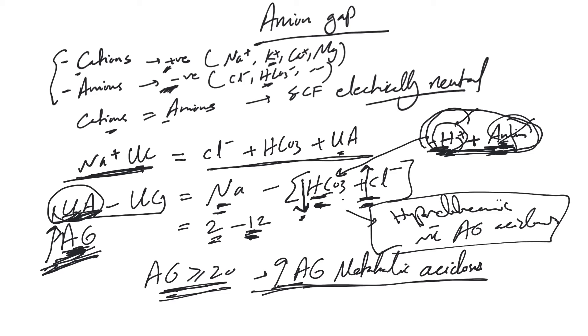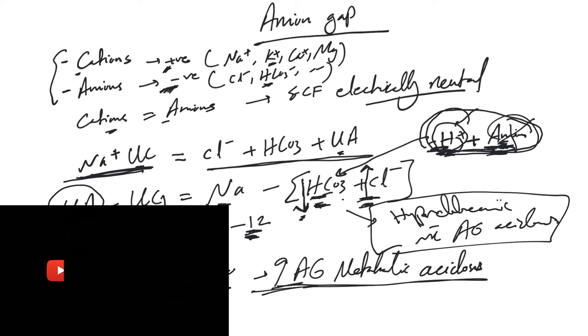Hopefully this makes it clear how the anion gap concept is created. Understanding this will make things much easier for us. Next video we'll start interpreting or looking into how to interpret ABGs. After that, we'll start talking about the different acid-base disturbances.